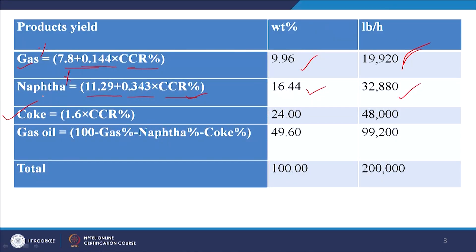For coke, the empirical relationship is: coke (weight percent) = 1.6 × CCR (weight percent). So 1.6 × 15 = 24 weight percent, which is equivalent to 48,000 pound per hour.